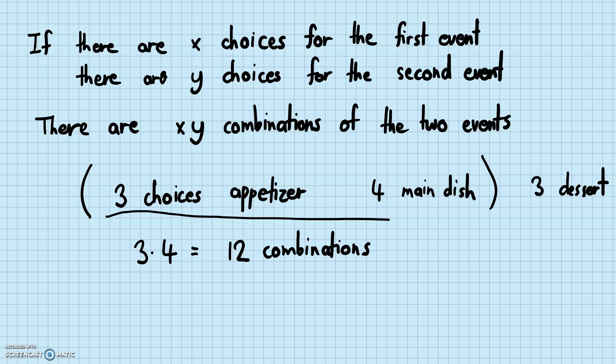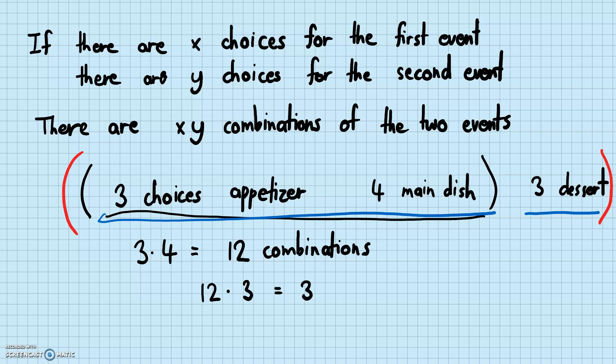If there are 12 combinations of appetizer and main dish, we can expand that with dessert. There are 12 possibilities for the first part and, say, three possibilities for dessert, so there are 12 times 3 total combinations. We can expand this to more than two choices. Since multiplication is commutative, you can multiply in any order — you're basically just multiplying all the choices to get the total number of possible combinations.